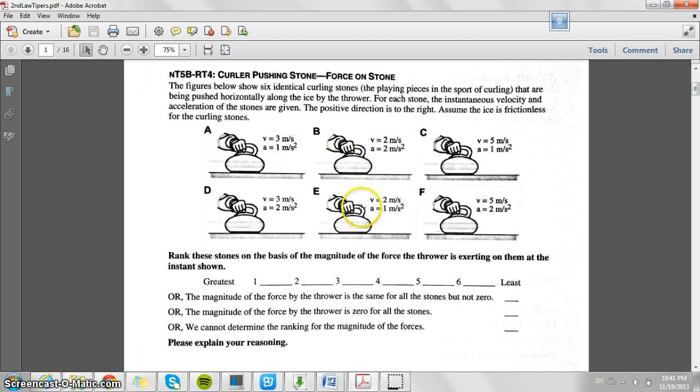And three of them, A, E, and C, have an acceleration of one meter per second squared. And D, B, and F have two meters per second squared as the acceleration.